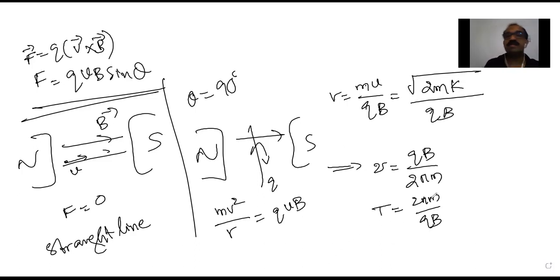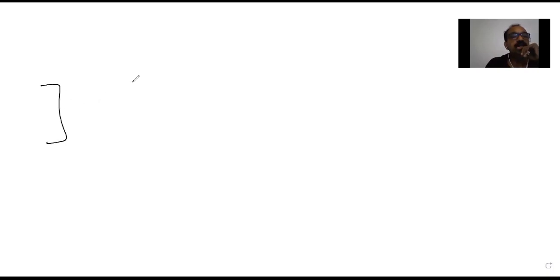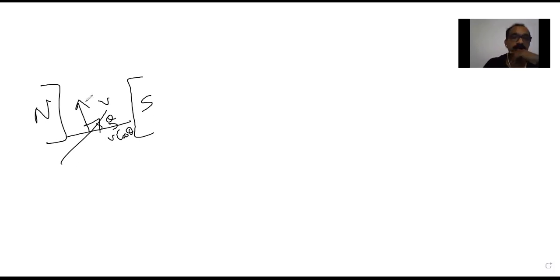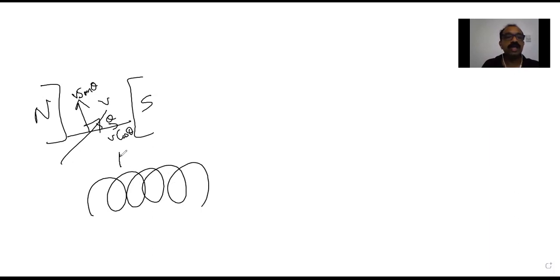If the charge particle is moving in a magnetic field at an arbitrary angle θ, it will have both types of motion: circular and straight line. The component v cosθ causes straight-line motion (parallel to the field, no force), while v sinθ, being perpendicular to the field, causes circular motion. The combined effect is a helical path.